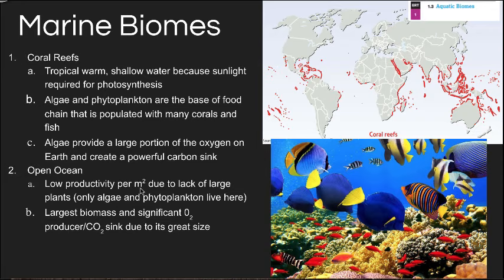Open ocean covers anywhere on the map that isn't land or coral reef. It has low productivity — less photosynthesis per square meter — because there are really only algae and phytoplankton, well-dispersed across vast water and space. However, due to its enormous size — roughly 70% of the planet — the open ocean has the largest total biomass and is a significant oxygen producer and carbon sink.